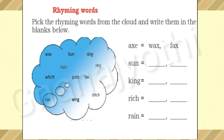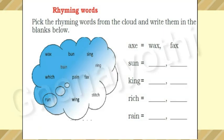Look at this cloud picture, children. They have given a few words. We need to find the rhyming words of these words from the cloud. The first one they have already given — that is 'axe.' Wax and fax are the rhyming words.